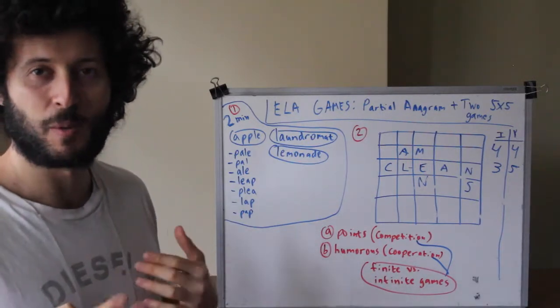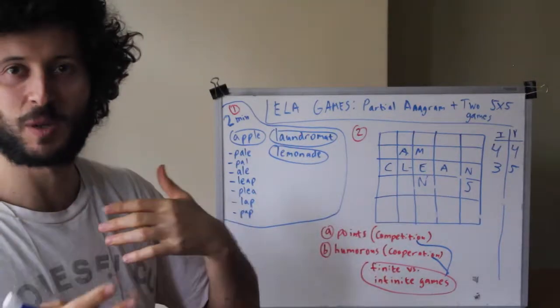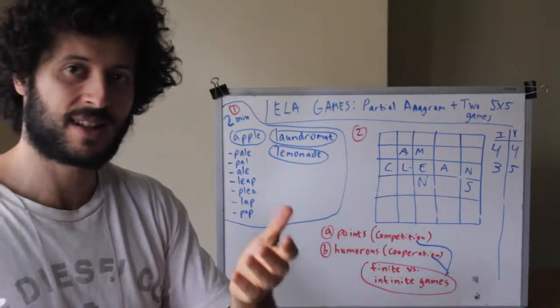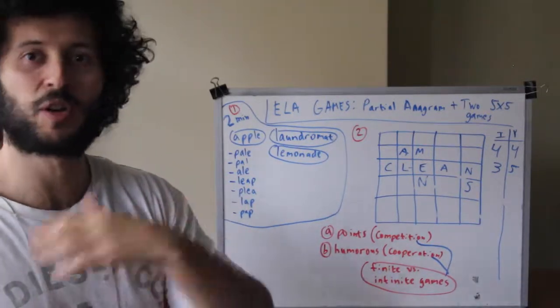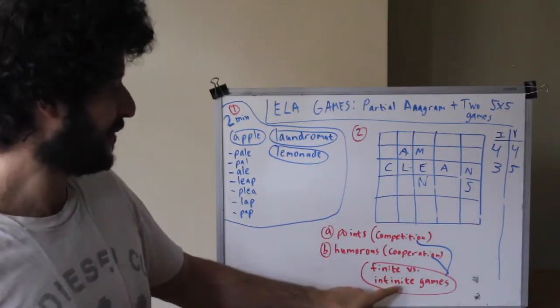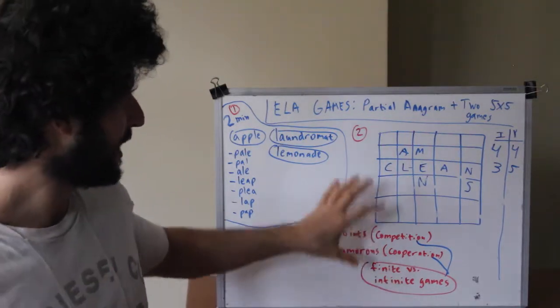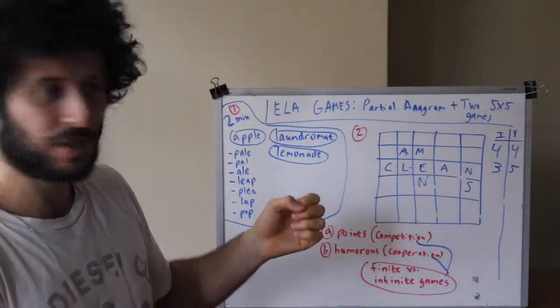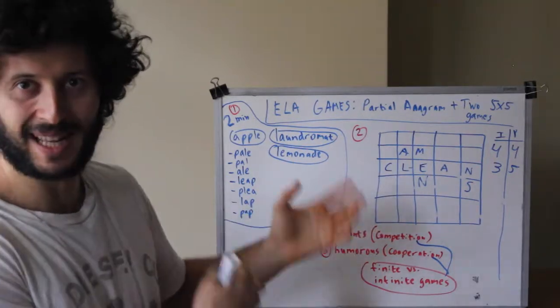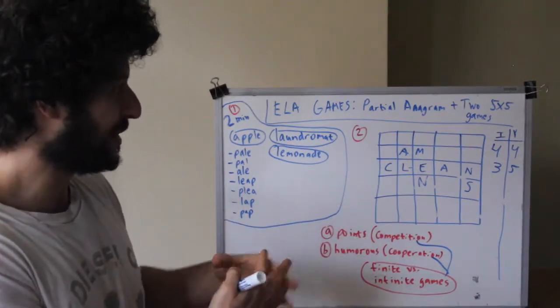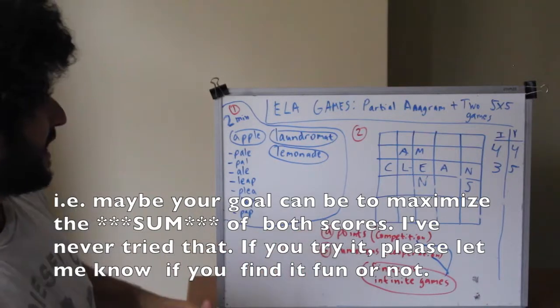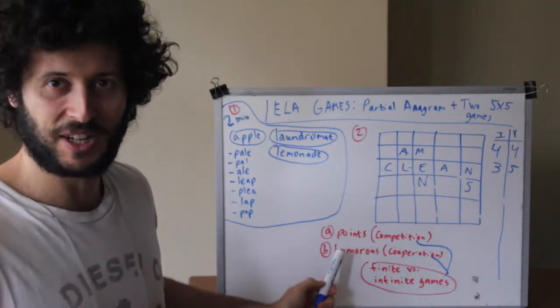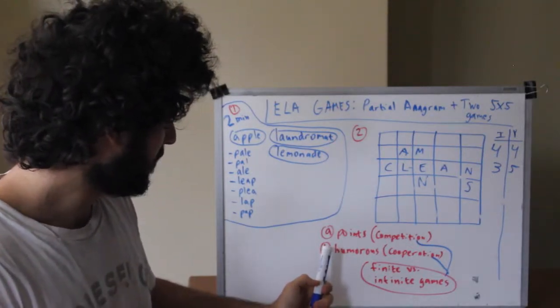This has to do actually with a broader topic of finite versus infinite games. Finite games are pretty competitive and they end after a finite duration, whereas infinite games you're trying to stretch them out as long as possible and they tend to be more cooperative. For example in tennis, the way it's normally played it's a finite game where one of us tries to win the point, but we could play it as an infinite or cooperative game where we just try to hold a long rally. So you can turn this from a finite game to an infinite game where your goal is not to outdo the other person but rather to work together to get a fun game going.